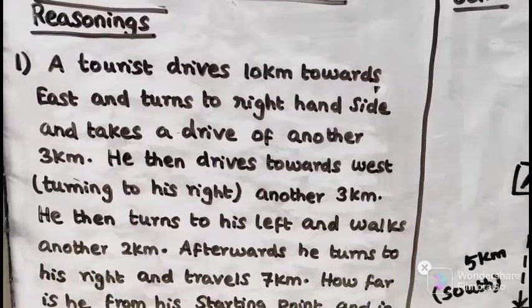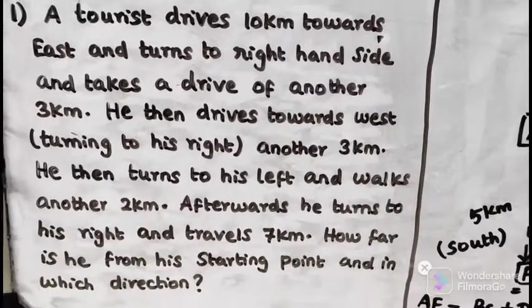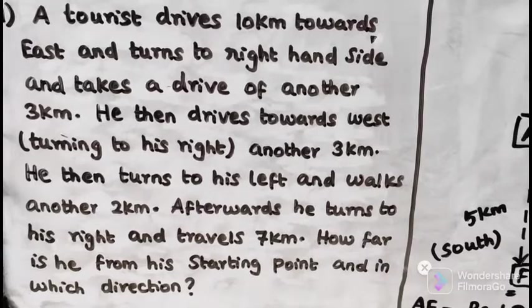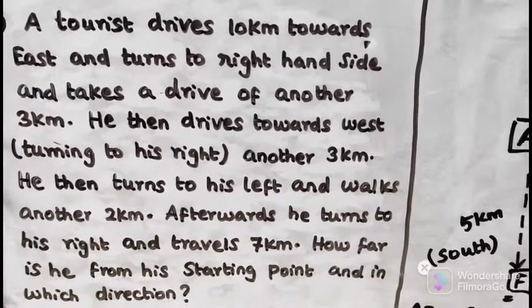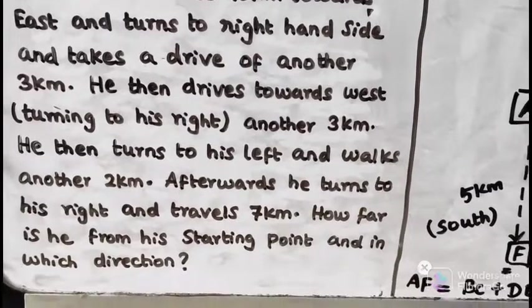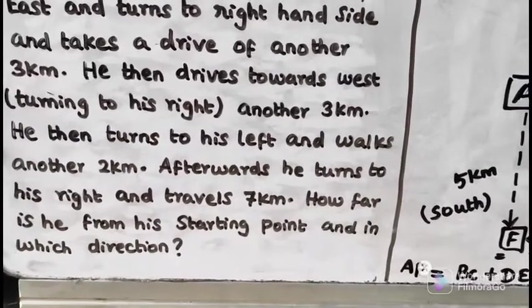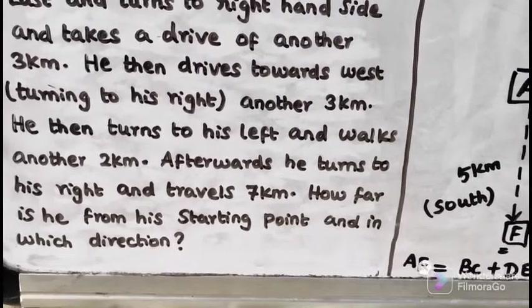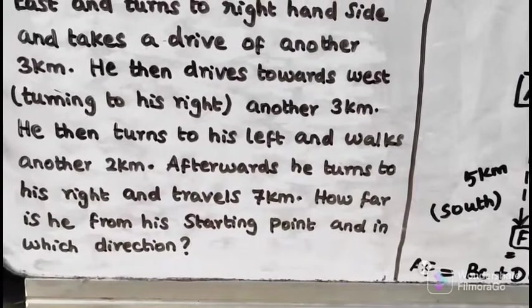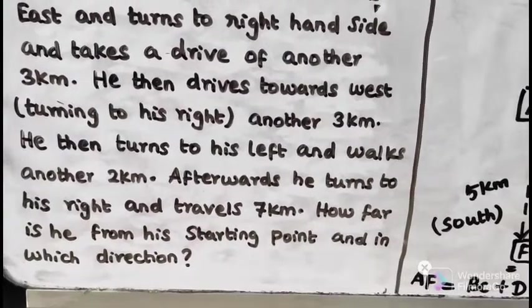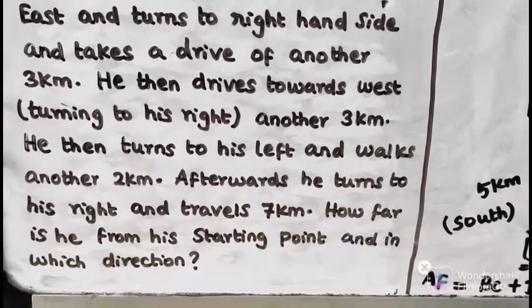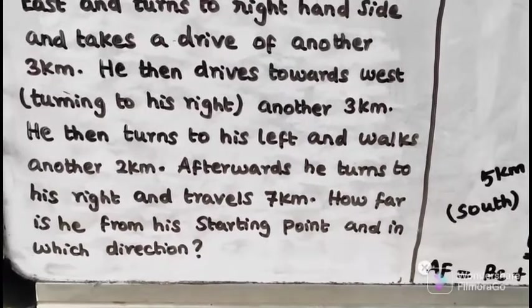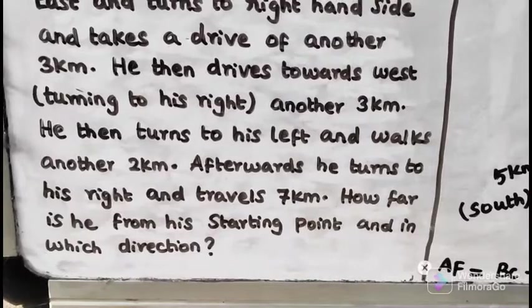First problem: A tourist drives 10km towards east and turns to right hand side and takes a drive of another 3km. He then drives towards west, turning to his right another 3km. He then turns to his left and walks another 2km. After that, he turns to his right and travels 7km. How far is he from the starting point?